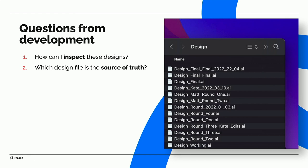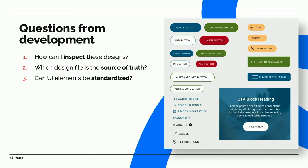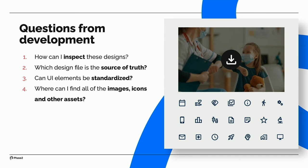Can UI elements be standardized? While every composition might look beautiful and consistent, developers start digging in and find subtle differences with things like buttons and card treatments — some things have borders, some don't, sometimes the icon's on the left or right. Where can I find images, icons, and other assets? All of these are locked into the design file, and developers have to keep coming to the designer to ask for different assets.